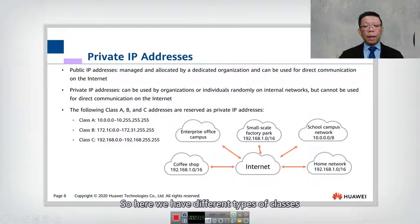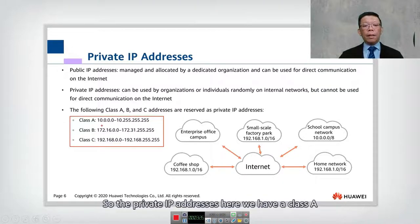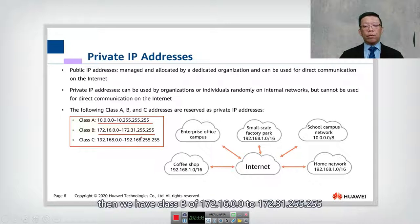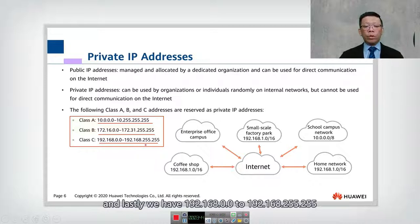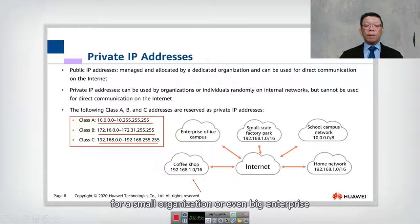There are different classes of private IP addresses. Class A is from 10.0.0.0 to 10.255.255.255. Class B is from 172.16.0.0 to 172.31.255.255. Class C is from 192.168.0.0 to 192.168.255.255. For the internet you need a public IP, but for small or large organizations you can use private IP addresses.